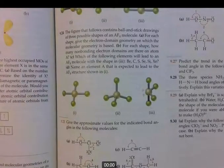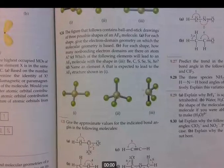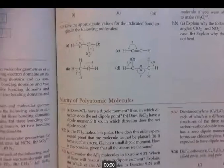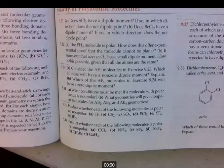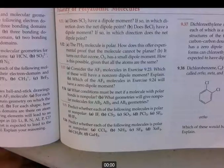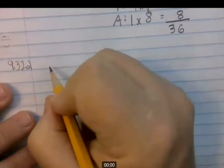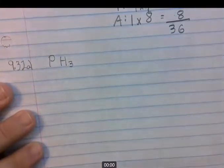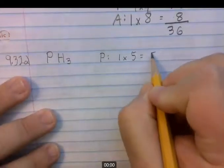Next up is 9-32. The problem says PH3 molecule is polar. How does this offer experimental proof that the molecule cannot be planar? Let's do a Lewis dot on it. Phosphorus, you have one of those, and the periodic table tells you phosphorus has five valence electrons. Hydrogen, you have three of those, periodic table tells you there's one, so that's three. So that's going to be eight.